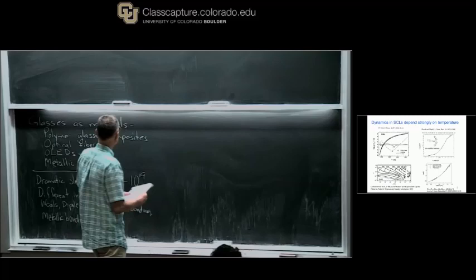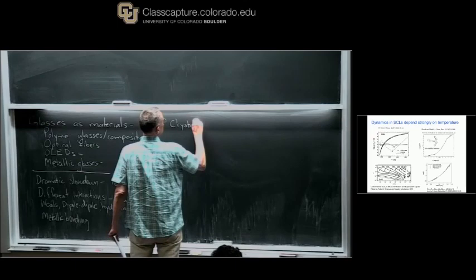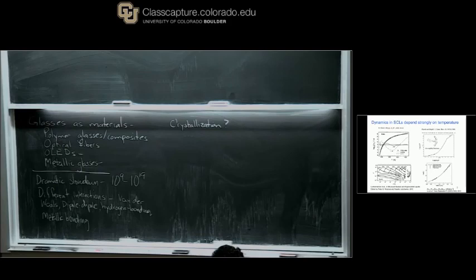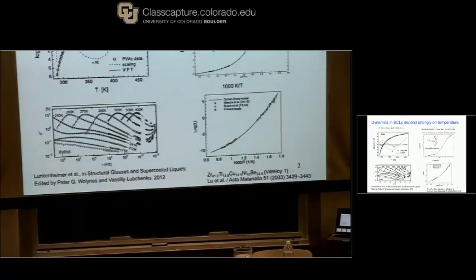Sometimes we have to worry about experimental systems crystallizing, just like you have to worry about that in simulations. If there's no gap in the data, then there wasn't a problem in the experiment. For the metallic glass, there was a region where the nucleation and growth of crystals is just too rapid to allow a fair characterization of the liquid.